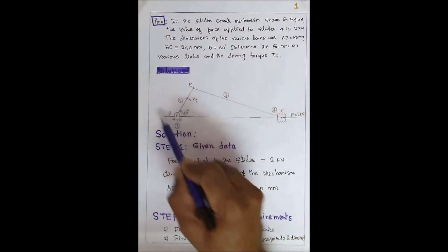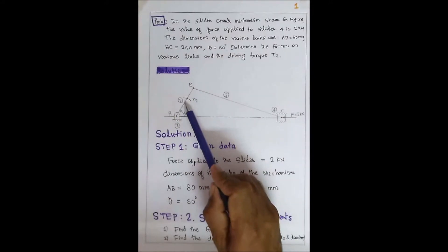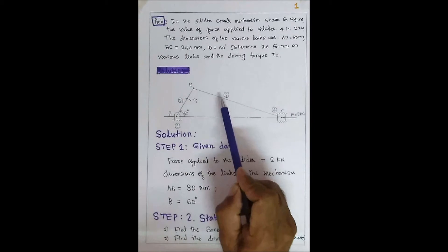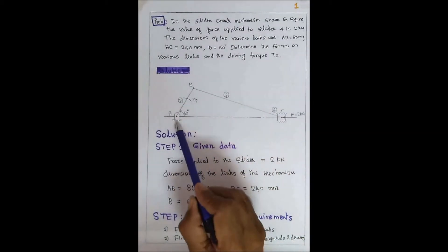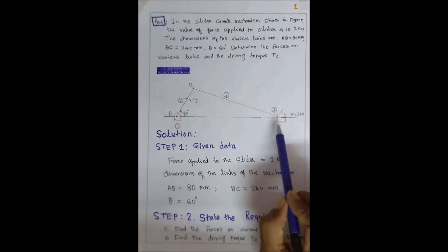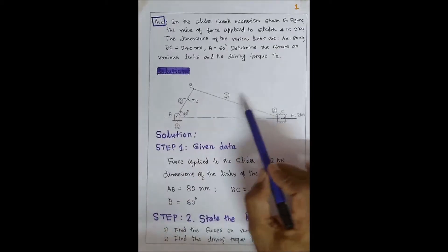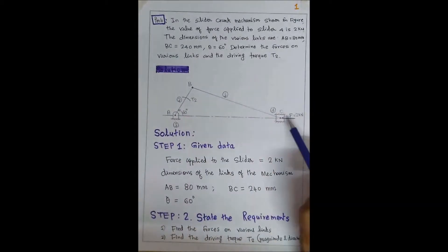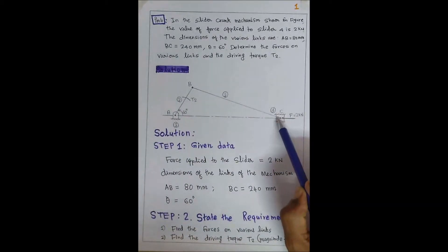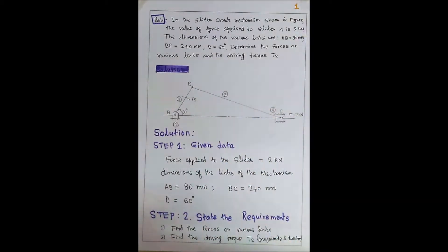This is the given diagram. You know this is the slider crank mechanism. This is the crank, connecting rod, and piston. The cylinder is the fixed link. Link 1 is the cylinder acting as the fixed link, link 2 is the crank, link 3 is the connecting rod, and link 4 is the piston. On the piston, a 2 kN force acts horizontally.